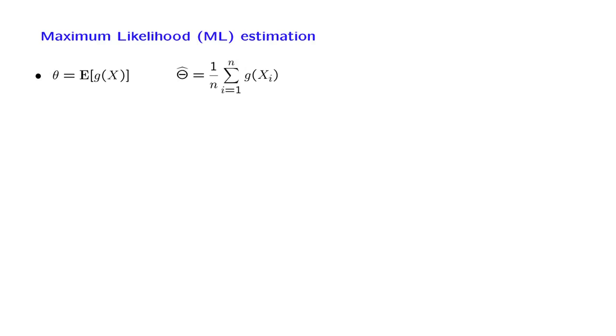If an unknown parameter can be expressed as an expectation, we have seen that there is a natural way of estimating it. But what if this is not the case? Suppose there is no apparent way of interpreting theta as an expectation, so we need to do something else. Rather than using this approach, we will use a different approach.